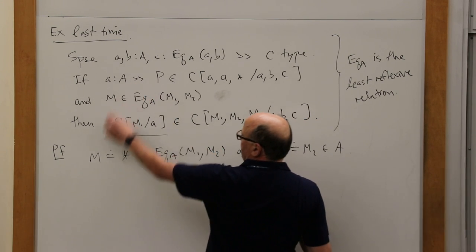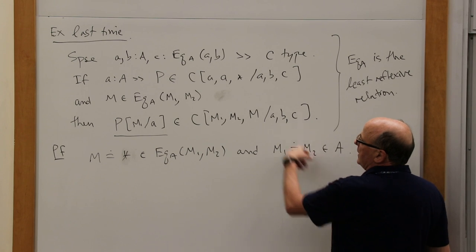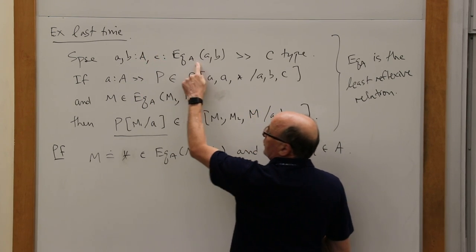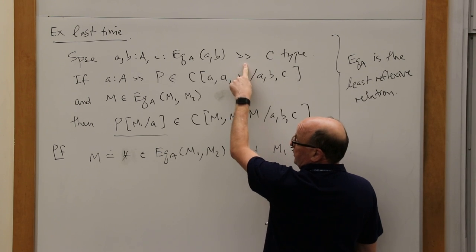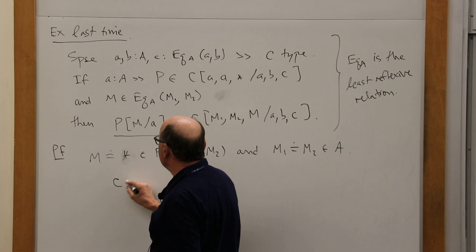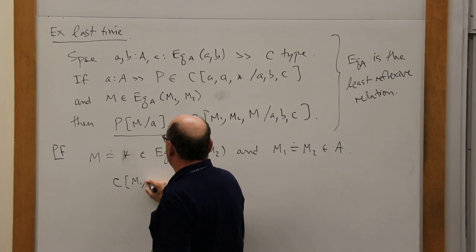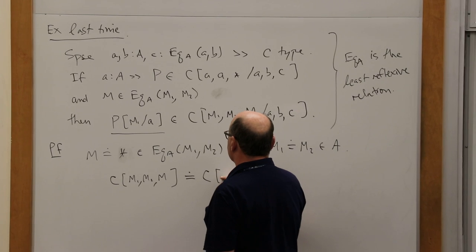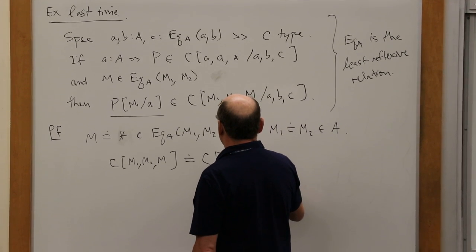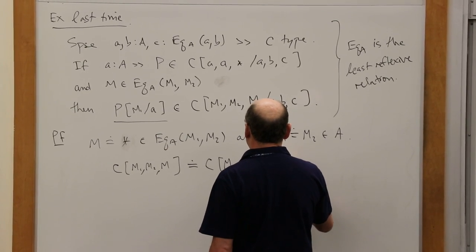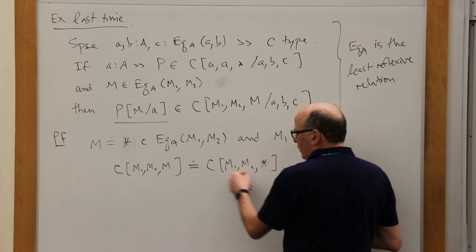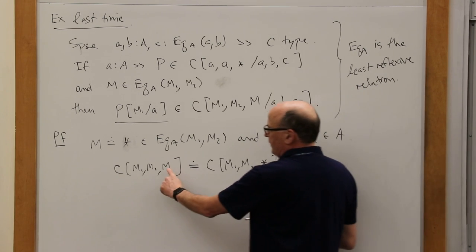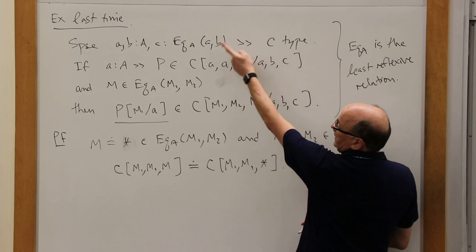Now we have two equations: M equals star, and M1 equals M2. C has a functional dependency on two elements of A and evidence for their equality. Because of the meaning of this being a functional dependency, it respects equality. So in particular, C of M1, M2, and M is going to be exactly equal to C of M1, M1, star — because M1 equals M2, you flip it and do transitivity, so M1 equals itself, and M equals star.